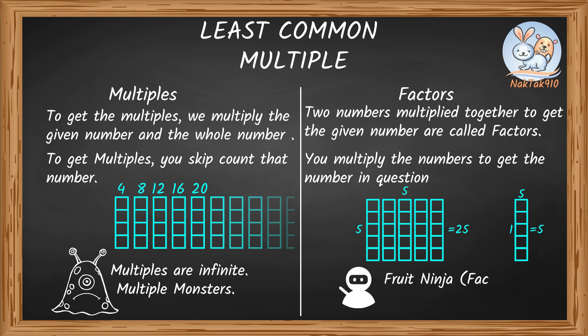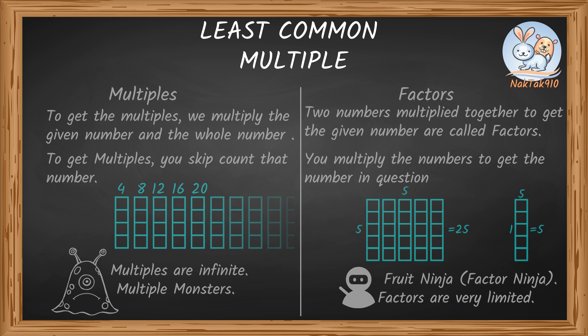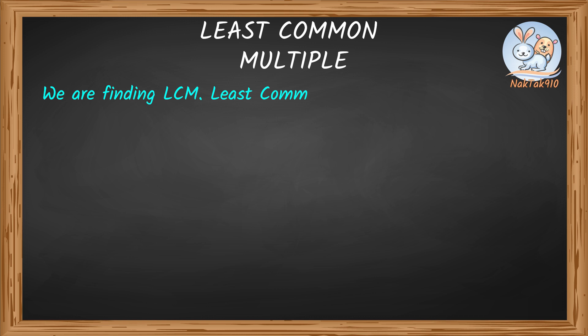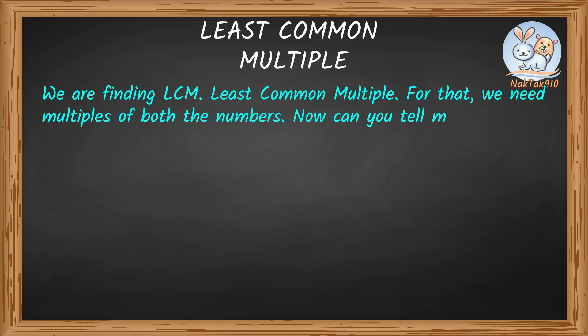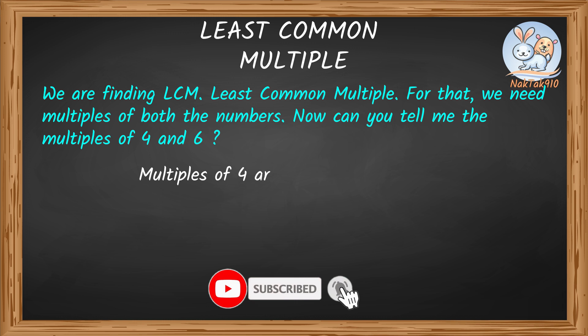So we're finding LCM, least common multiple. For that, we need multiples of both the numbers. Now can you tell me the multiples of 4 and 6?